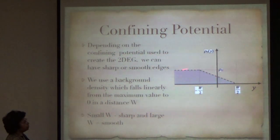It actually falls linearly from whatever the maximum value it has to 0 in some width w. If this w were very small and it fell sharply, then I would call that a sharp edge, because that is how the edge of the sample goes. But you can go towards the edge of the sample in a smooth way as well.